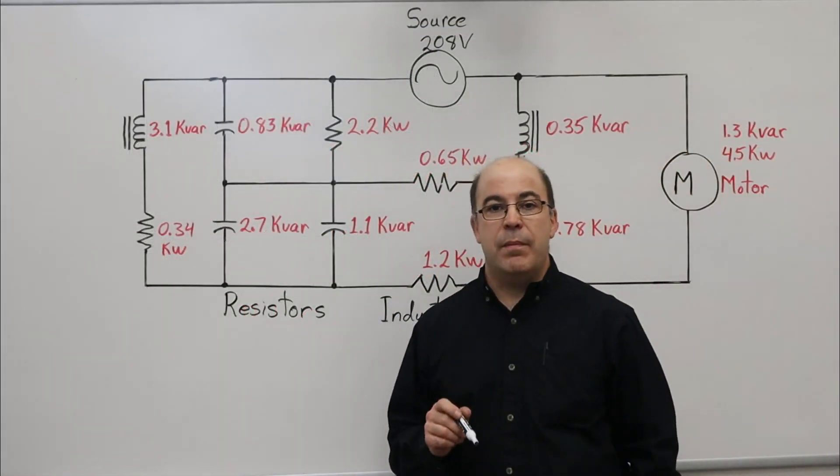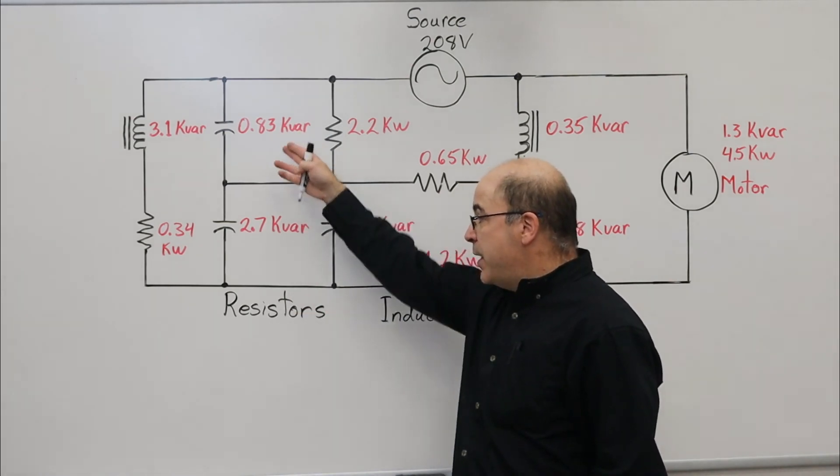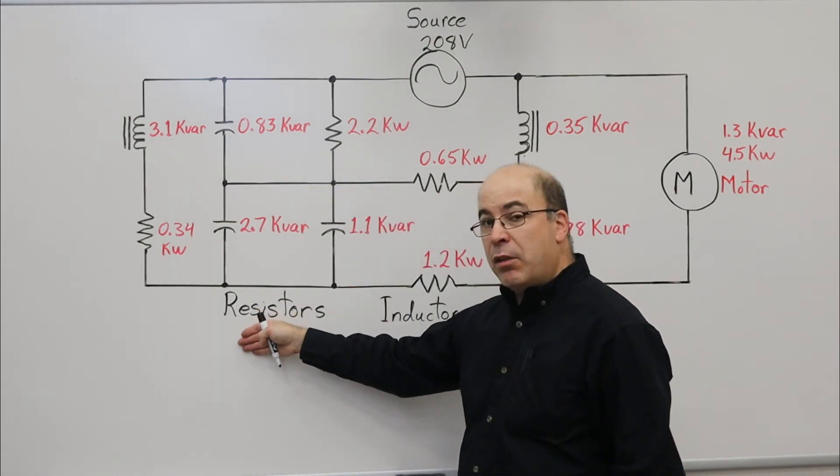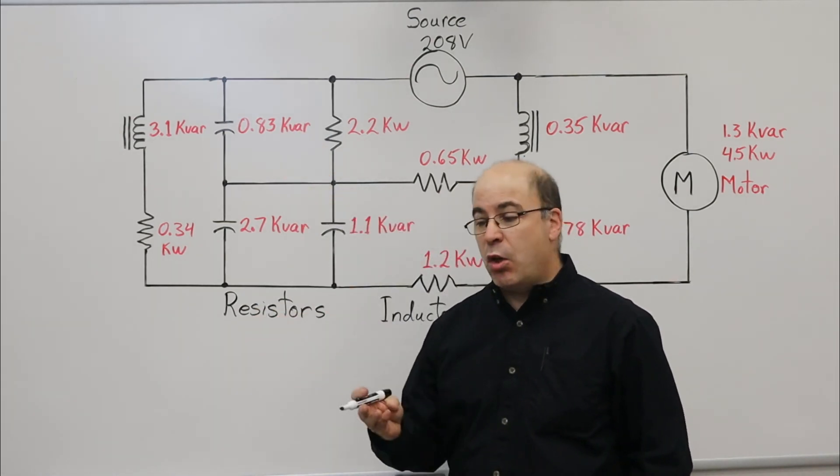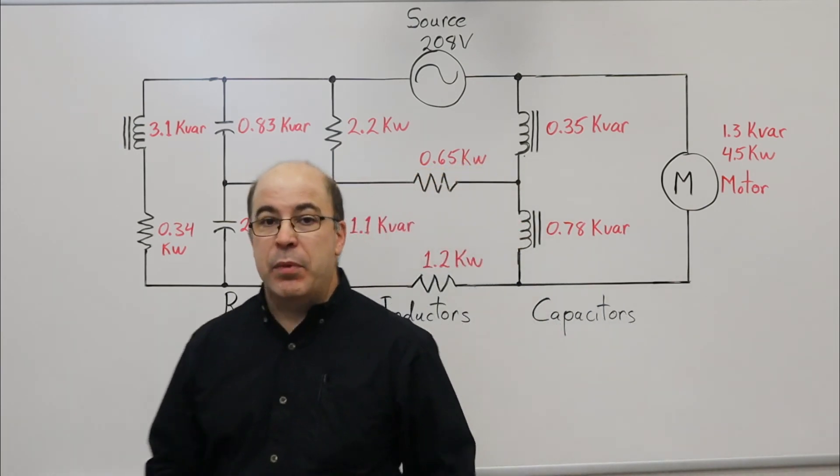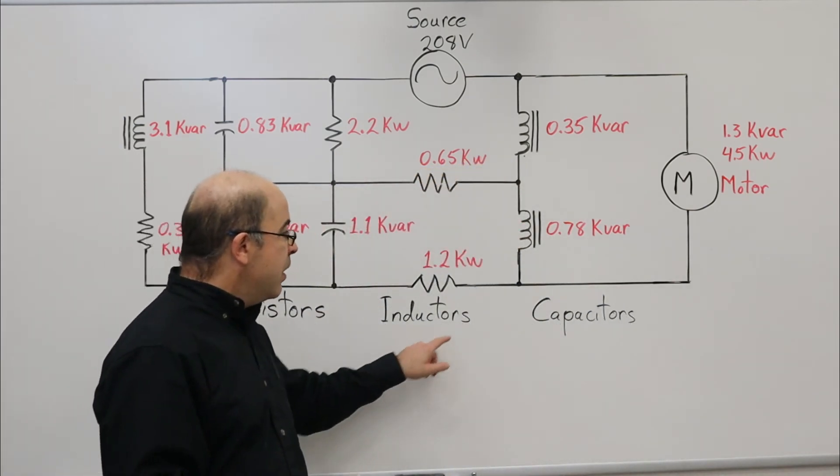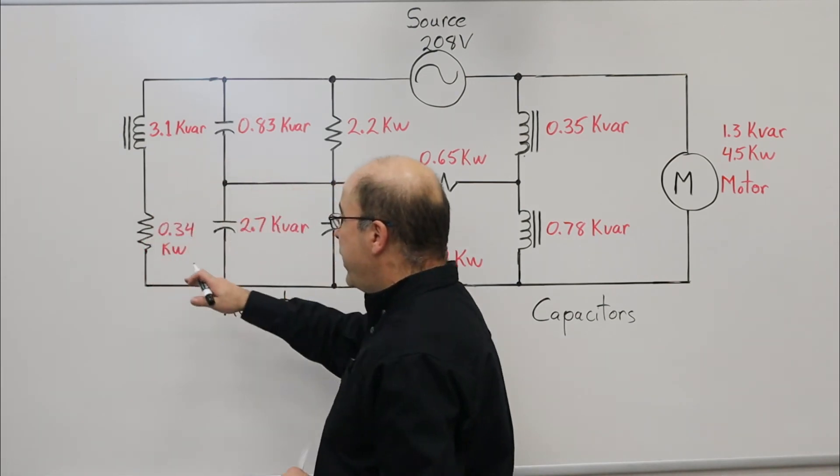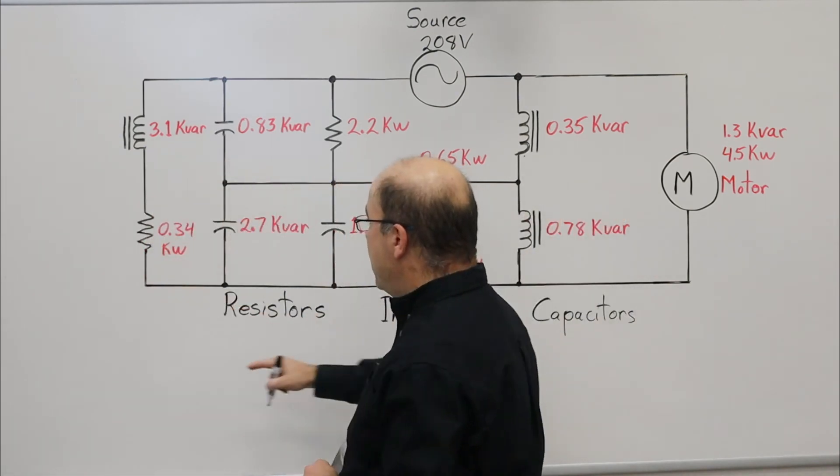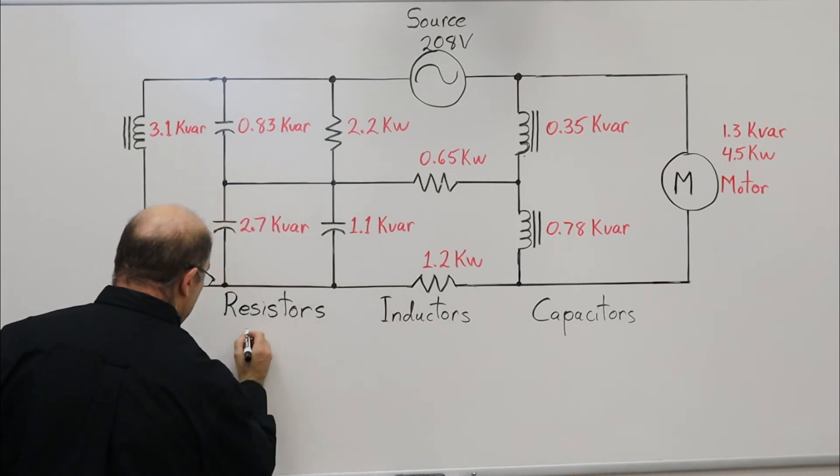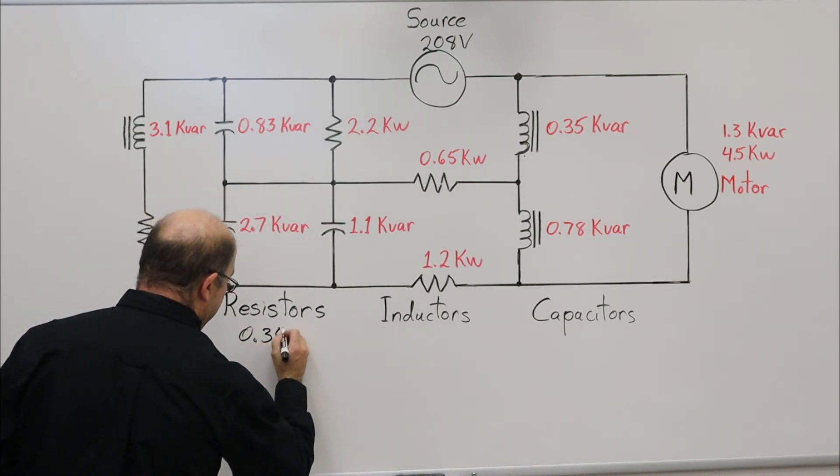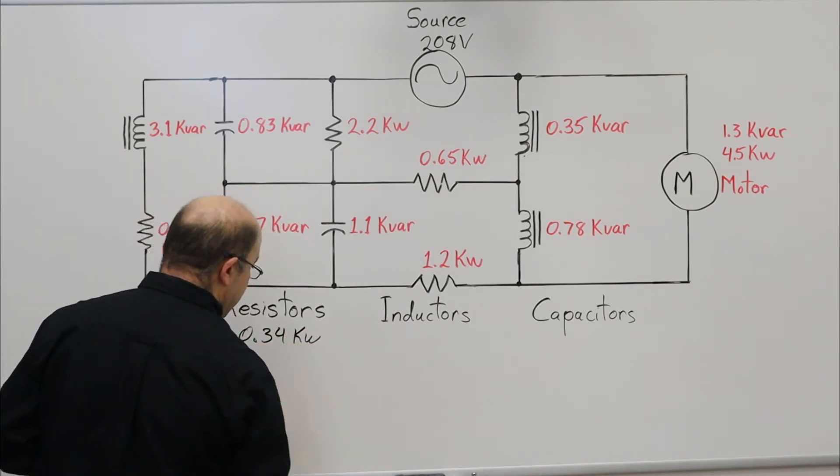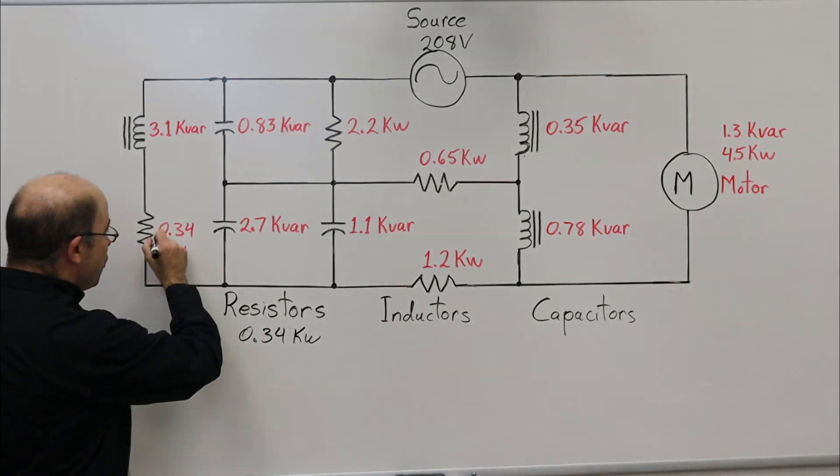Our first order of business is to tabulate and categorize each of these devices according to their type: resistors, inductors, and capacitors. I'm going to start with the resistors. Working from left to right, I've got 0.34 kilowatts. Now that I've got that down, strike it off.